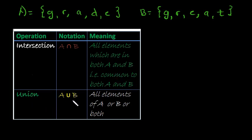While the union of a set means all elements of A or B or both. Now with intersection, the elements must be in both A and B. For union, the element may be in either A or B or in both. So let's write out the intersection for these two sets A and B.